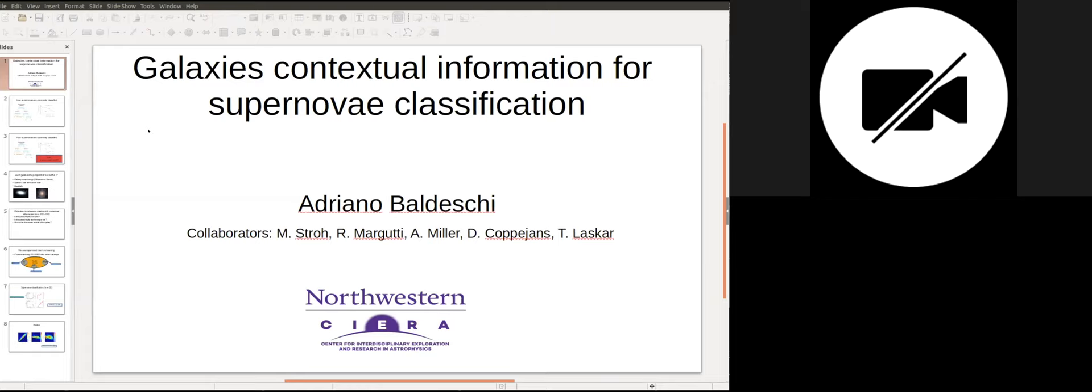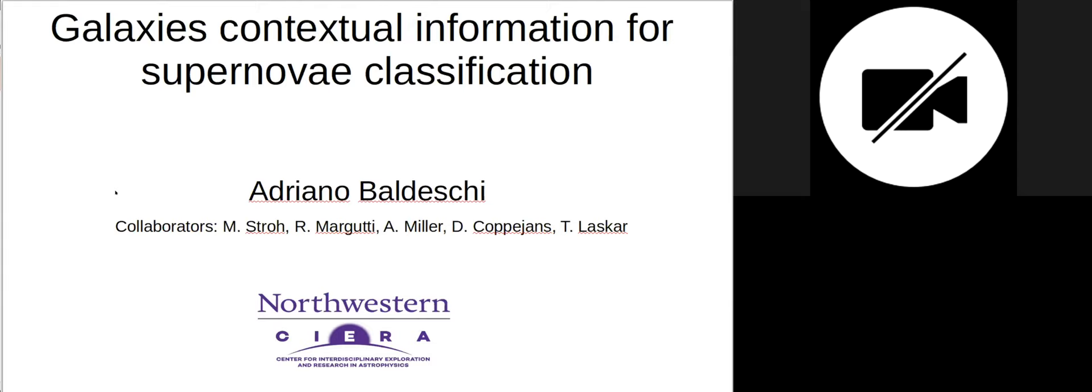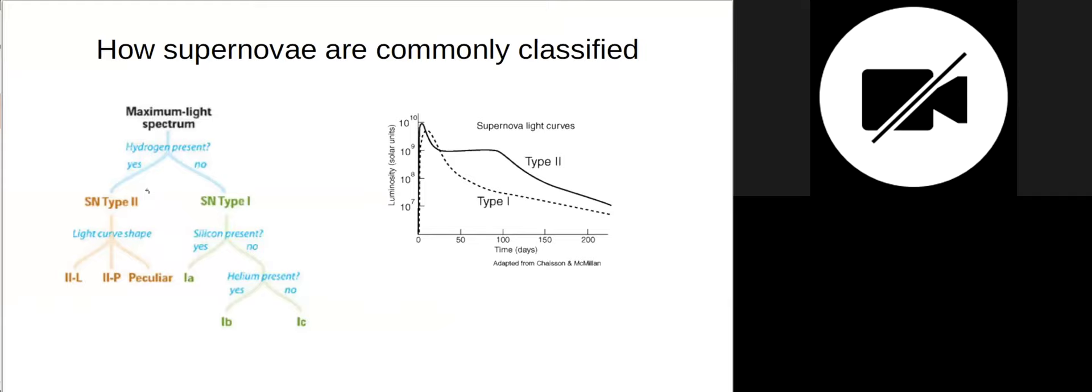Sure. Can you hear me? Can you see my slides? Yeah. Perfect. So hello, everyone. Today, I'm going to be talking about how galaxies contextual information can be useful for supernova classification. So first of all, let me say that how do we classify supernovae? Well, commonly, we have a look to the spectrum, to the spectral features, and then also to the light curves. And at the end, eventually, we are capable to classify a supernova.